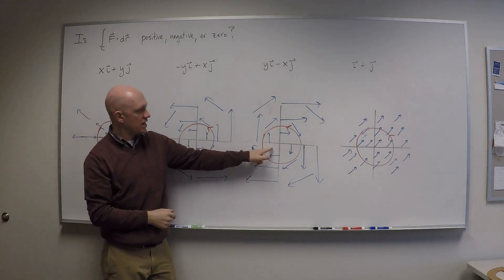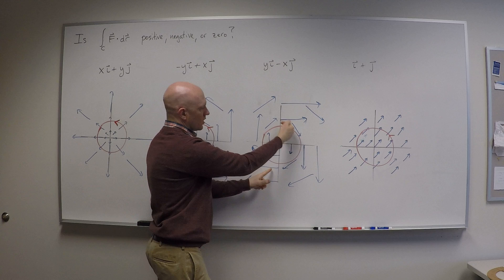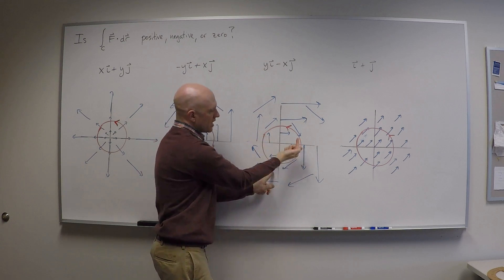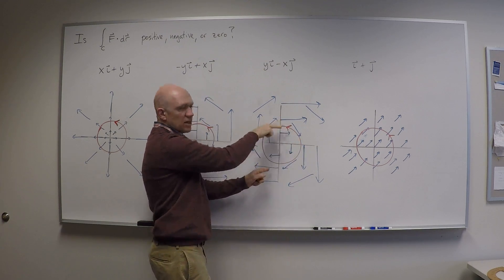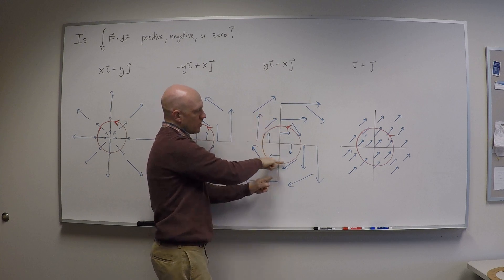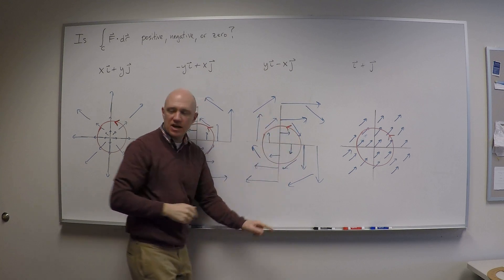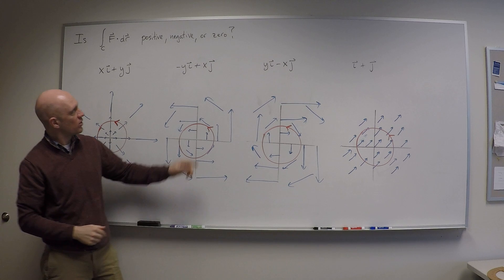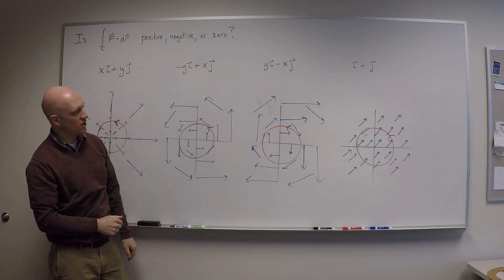Let's look at this one next. In this case, as I go counterclockwise around this circle, I'm always fighting against the vector field. It's always pointing kind of in the opposite direction of the way that I'm going, and so I should expect a negative result for the integral of f.dr.